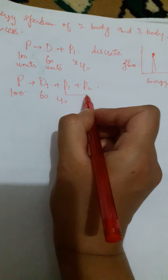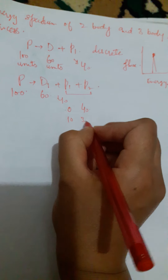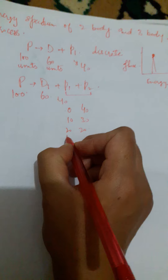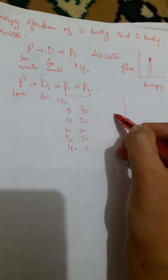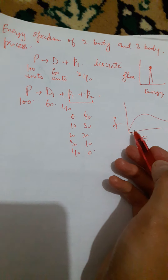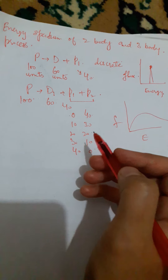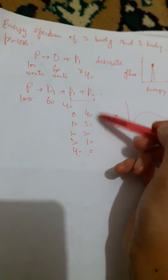In case of a three-body decay, that is a parent nucleus going to a daughter nucleus plus two more particles P1 and P2, if again the parent nucleus has 100 units of energy and the daughter has 60 units, the remaining 40 units will actually be distributed between P1 and P2, and that can have a number of cases. Suppose P1 takes 0, then P2 takes 40; if P1 takes 10, P2 takes 30; if P1 takes 20, P2 takes 20; if P1 takes 30, P2 takes 10; if P1 takes 40, P2 takes 0 — and so many intermediate values. In this way, you will obtain a continuous kind of plot of flux versus energy. If you plot the energy spectrum of any one particle, it will be continuous, having a number of values from 0 to endpoint, and not a discrete fixed value.